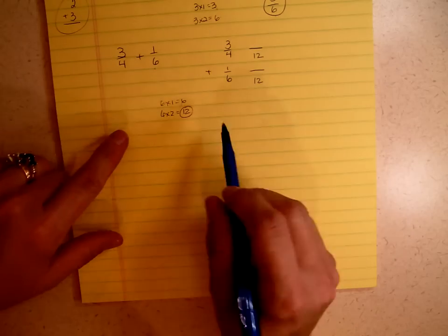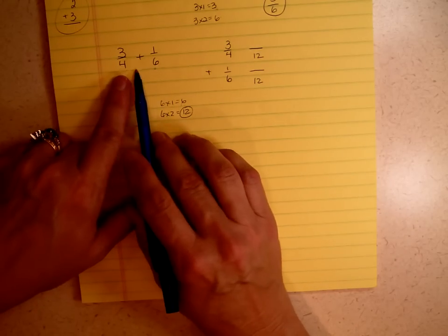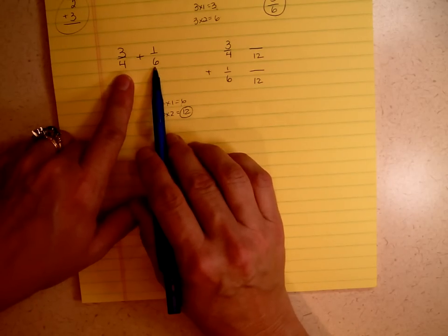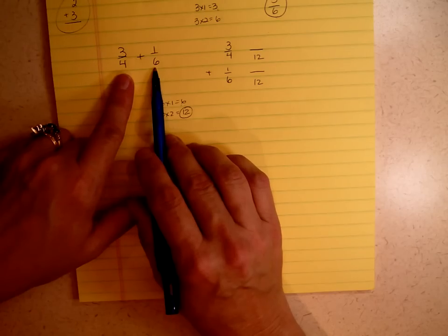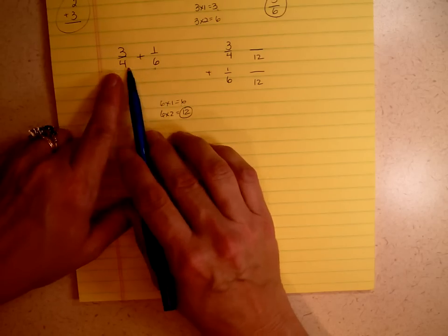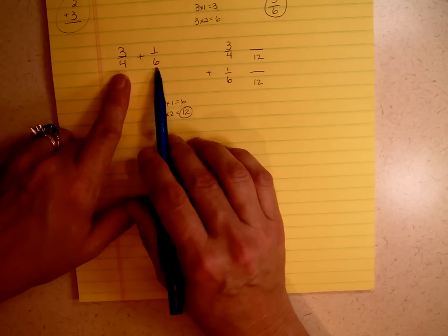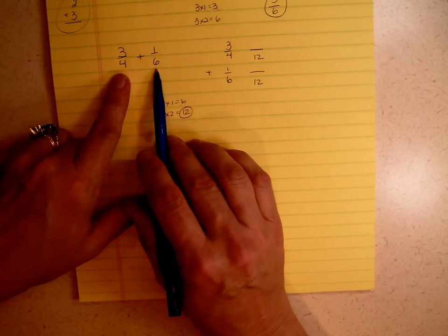I want to caution you. A lot of people just simply multiply the two denominators together, and that does give them a common denominator. And it is something that you can actually use to add the fractions. But you need to keep in mind that when you simply multiply the two, you get a common denominator, not necessarily the least common denominator. And frequently you will need to reduce.